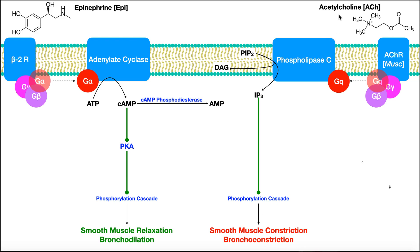If you think about acetylcholine being released by the vagus nerve — the vagus nerve is a major player in the parasympathetic nervous system — so rest and digest. If we're just sitting on the couch not doing anything, we don't need our airways to be open so much. So acetylcholine is going to promote them to close down — not totally, of course, but it's going to promote their constriction.